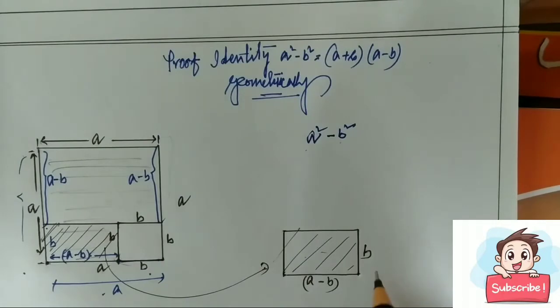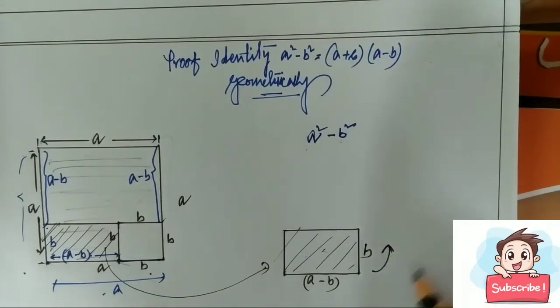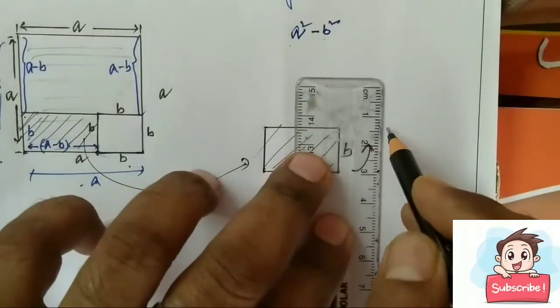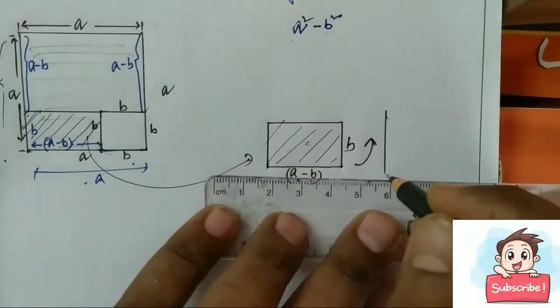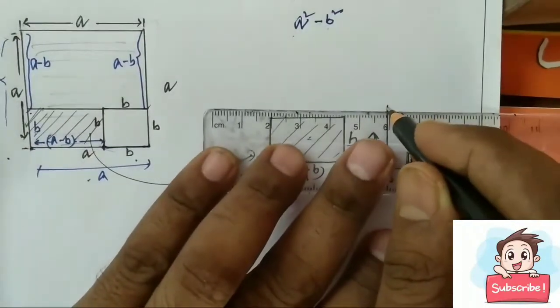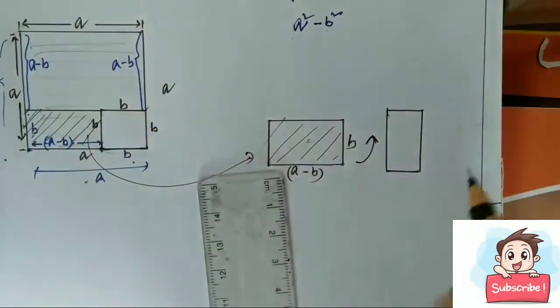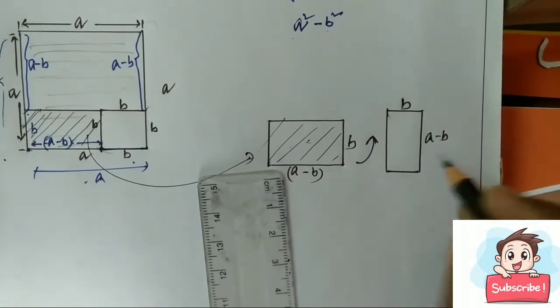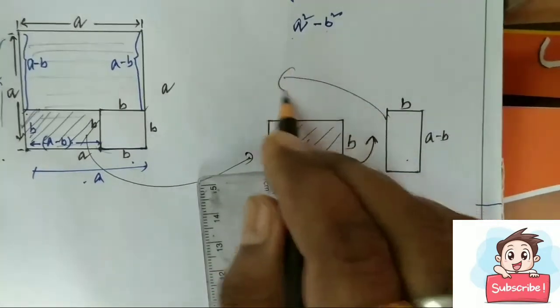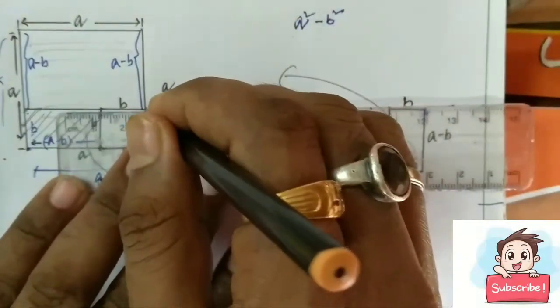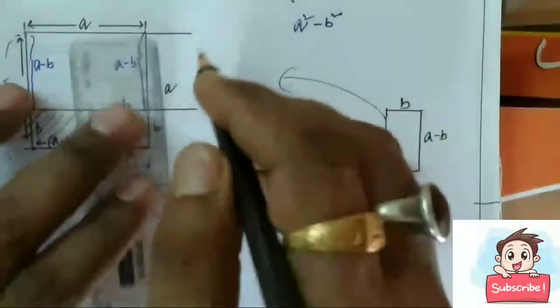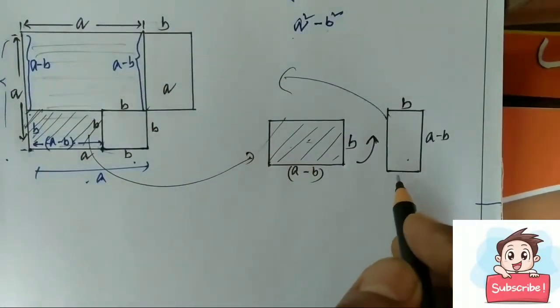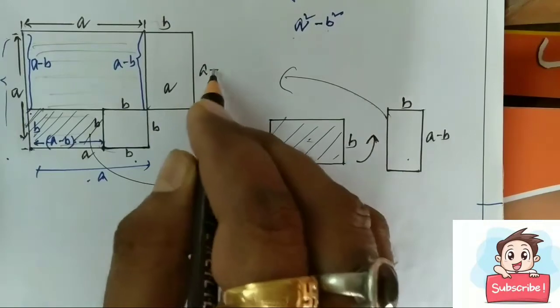If we rotate this rectangle anticlockwise 90 degrees, we get this one, b and a minus b, and we join it to here.